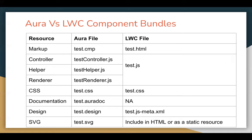Comparing markup: in LWC we have test.html instead of test.cmp. Then controller, helper, and renderer — all three files are combined into one JavaScript file. If you save your component with the name 'test', the HTML, JavaScript, and CSS files will all share the same name. In Aura they have different notation: the component uses test.cmp, and controller, helper, and renderer have those words added to 'test' to uniquely represent those JavaScript files. If both used test.js, it would be difficult to distinguish them — that is why this naming convention is used in Aura.